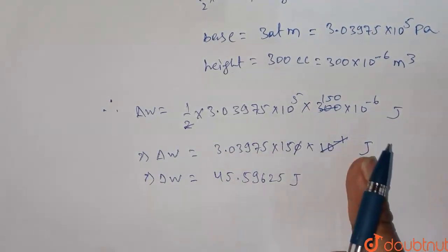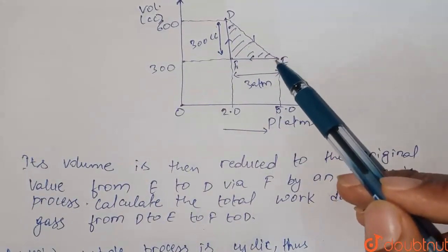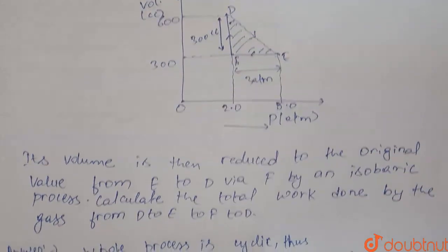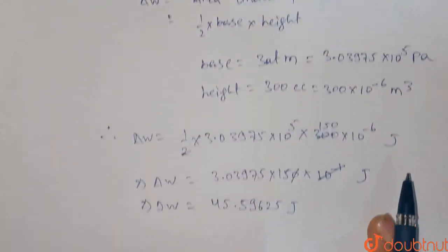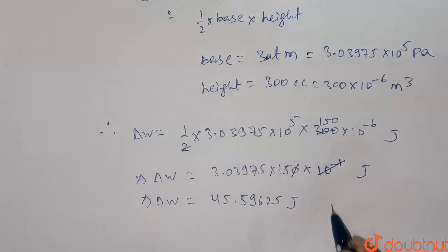Thus, this much amount of work is done in the whole process, that is bringing the volume from E to its initial state. That's all for this question guys. 45.59625 is the answer for this question. Thank you.